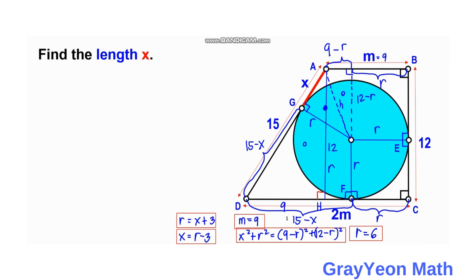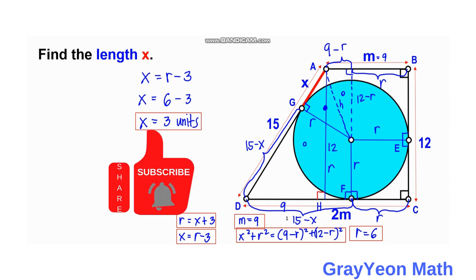For the final step, we find X: X = R − 3 = 6 − 3 = 3 units. That is our answer. Thank you for watching until the end of the video. Please like the video if you enjoyed the solution, and don't forget to subscribe and hit the bell icon to be updated on more math videos. Thank you, bye!